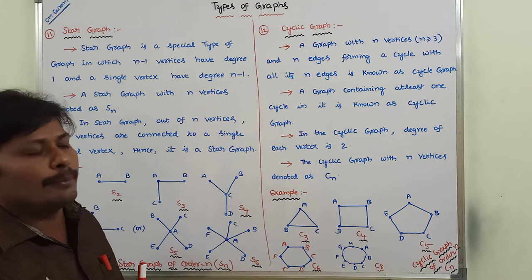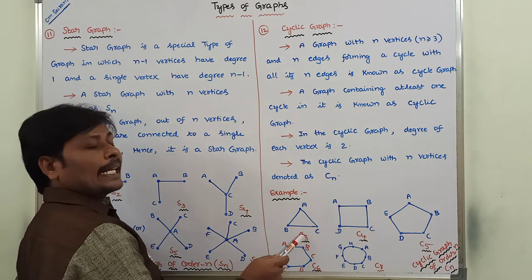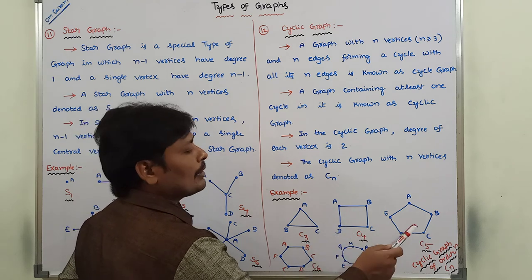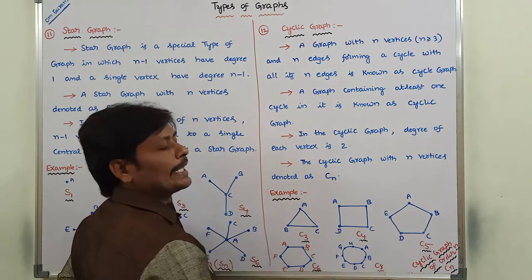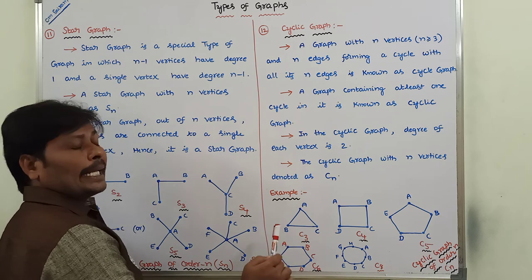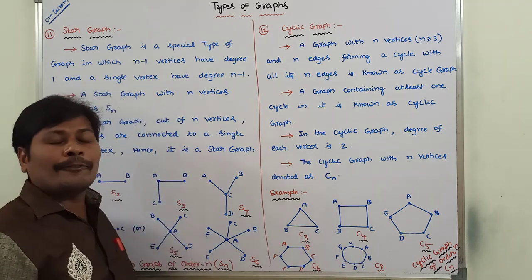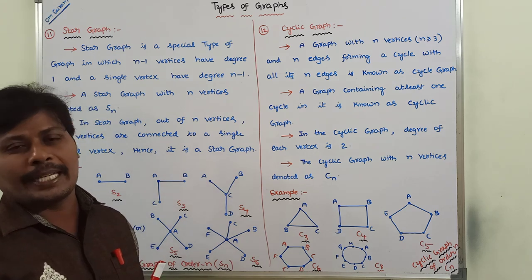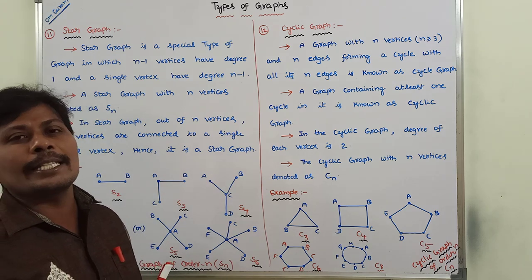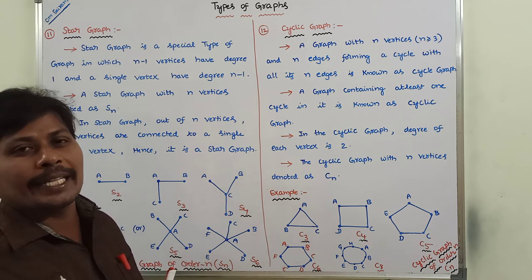The cyclic graph with n vertices is denoted by C suffix n. So C3 means cyclic graph with 3 vertices, C4 with 4 vertices, C5 with 5 vertices, C6 with 6 vertices, and C8 with 8 vertices. Thank you for watching this video. If you like this video, please subscribe to my channel.